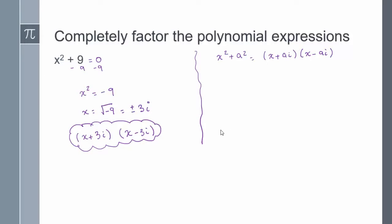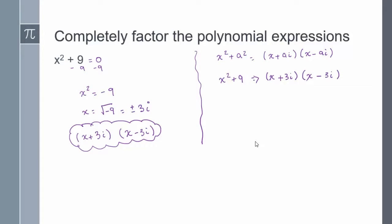Now let's go back and look at one of the identities from the previous slide. We know that x squared plus a squared can be factored into x plus ai times x minus ai. So if I factor x squared plus 9, I know I'll get an imaginary number because this is the sum of squares. The square root of x squared is x, and the square root of 9 is 3, but as an imaginary number it's positive 3i and negative 3i. This gives us the factored form of x squared plus 9.